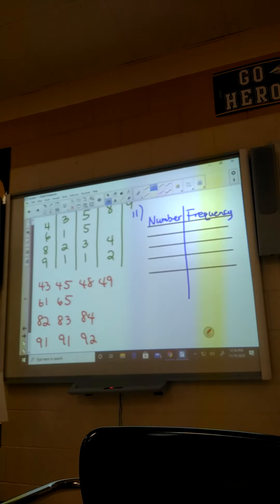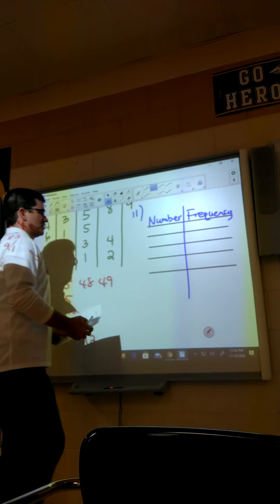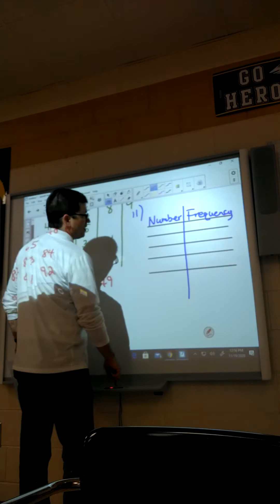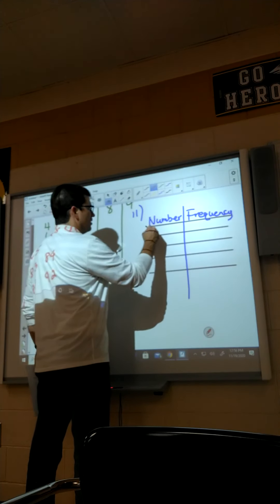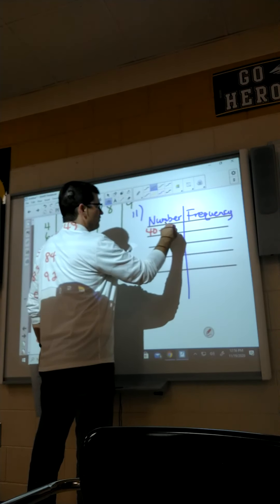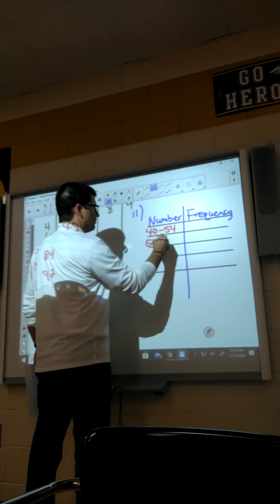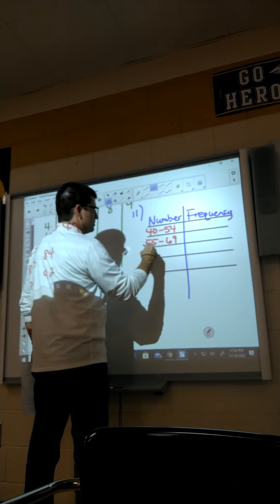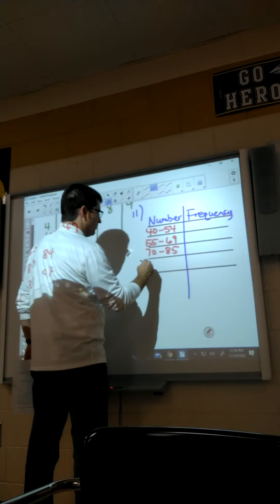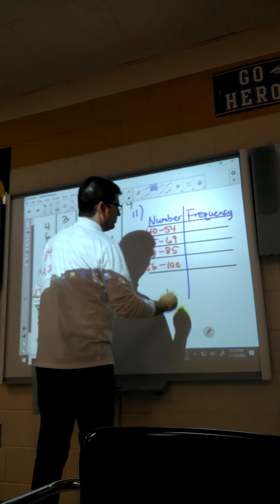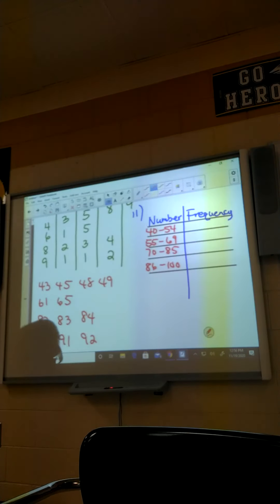We could do something like, it really doesn't matter how you set it up here. Let's do 40 through 54, 55 through 69, 70 through 85, 86 through 100. We'll do that, so we got four different rows.